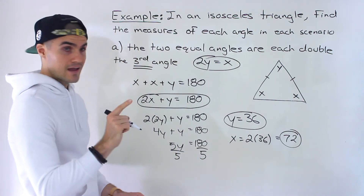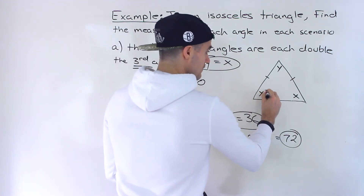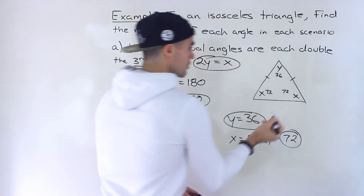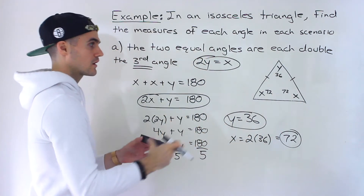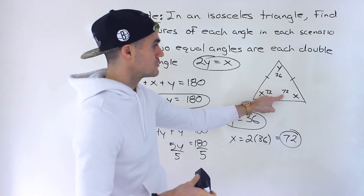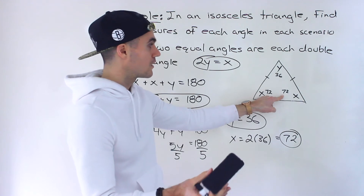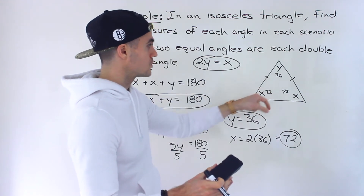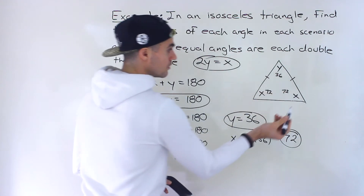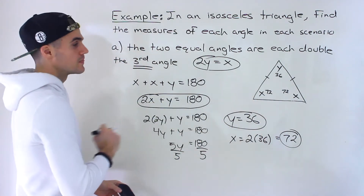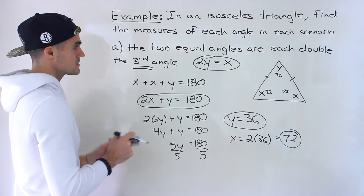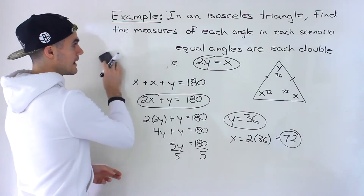So in Part A, this angle is 72, this angle is 72, and the third angle is 36. Checking: 72 plus 72 is 144, plus 36 gives 180. And notice that the equal angles are double the third angle, confirming our solution for Part A.